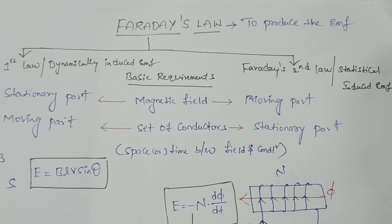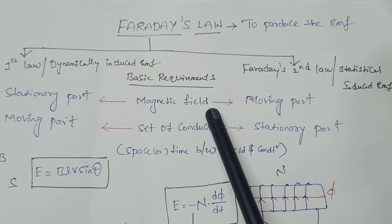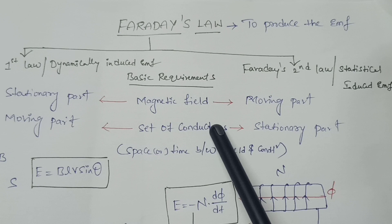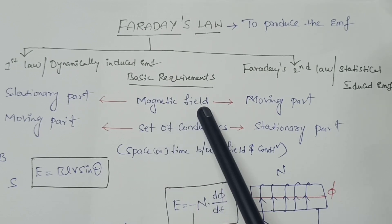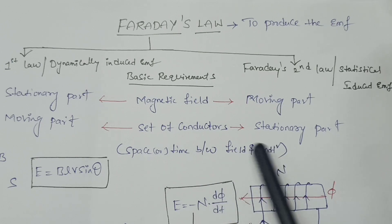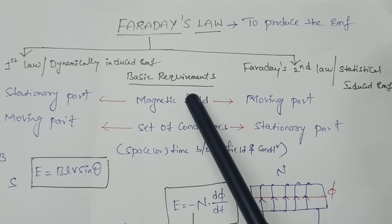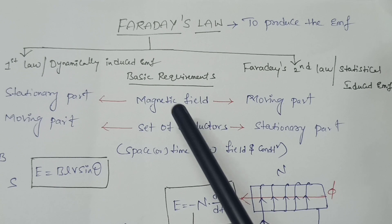To produce EMF using Faraday's law, these are the basic requirements. The first requirement is a magnetic field and a set of conductors. Between the field and the conductor, we must have some time variation or space variation. These are the main requirements to find the induced EMF in Faraday's law.